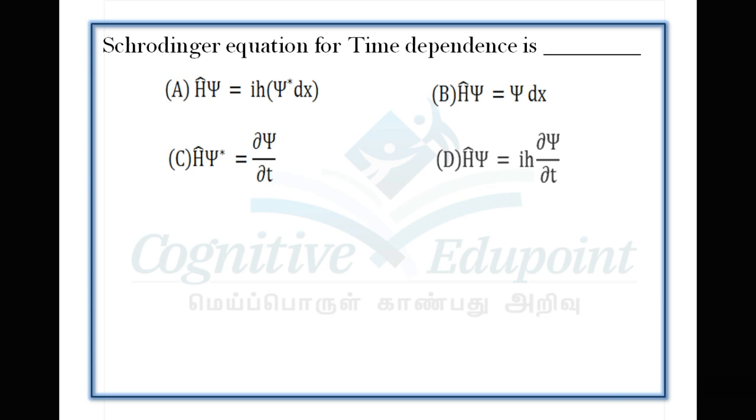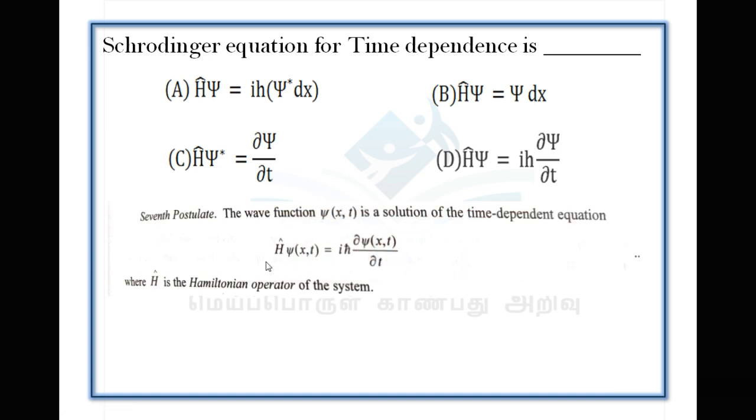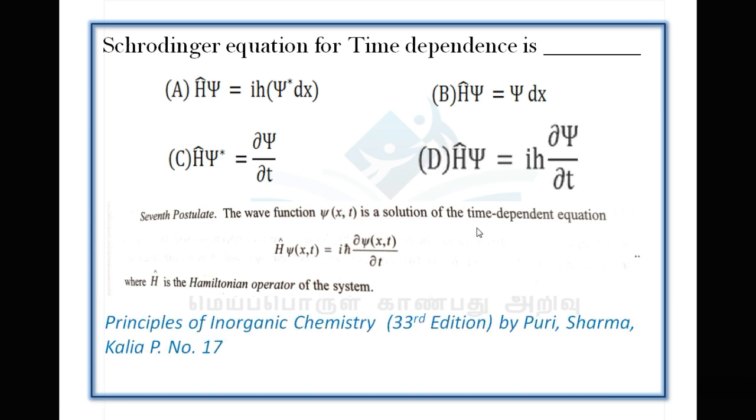Next question: Schrödinger equation for time dependence. The correct answer is H psi(x,t) = ih cross ∂psi/∂t. Where psi is a function of position and time, H is the Hamiltonian operator, x is position, t is time, and h cross is Planck's constant divided by 2π. The answer shows H psi equals ih cross ∂psi/∂t or ih ∂psi/∂t. Correct answer is D.